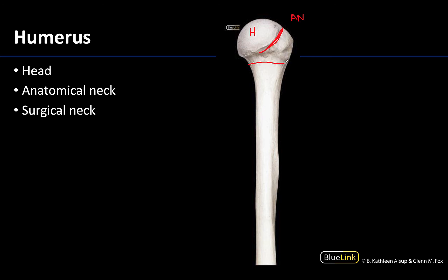Then you have the surgical neck, which is not present in all bones that have a head, but in the humerus it is just distal to both tubercles, away from the complex of the head and tubercles. At the surgical neck, important neurovasculature wraps around it — specifically the axillary nerve, which innervates the deltoid and teres minor. This area is named separately because it is one of the more common sites for humerus fracture, and a fracture here could directly affect the axillary nerve and the actions of the deltoid muscle.